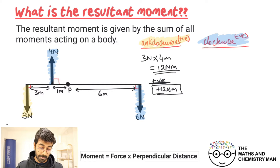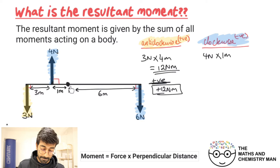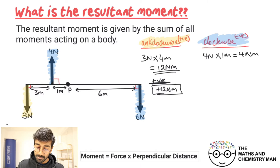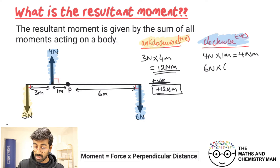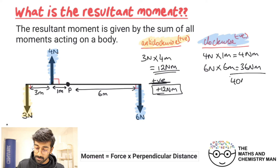Looking at the clockwise direction, we've got two forces. Starting with the four Newton force: four Newtons multiplied by one meter gives a moment of four Newton meters. And for the six Newton force: six Newtons multiplied by six meters gives 36 Newton meters. Because we've got two moments in the clockwise direction, we sum them together to get an overall clockwise moment of 40 Newton meters.